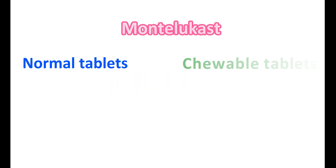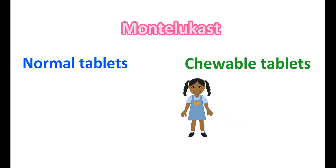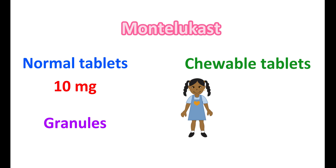Montelukast is available as normal tablets as well as chewable tablets. Chewable tablets are intended for use in children. Montelukast is also available as granules, useful in children aged less than 6 years. As normal tablets, it is available at a single strength of 10 mg. Chewable tablets are available at two strengths: 4 mg and 5 mg. The dosing is highly specific in children — a difference of just 1 mg can produce significant clinical effects — so these two strengths should not be confused.